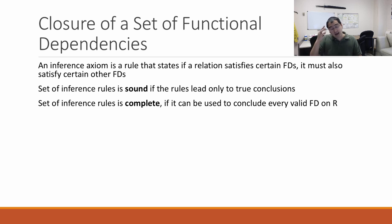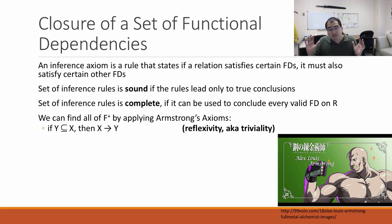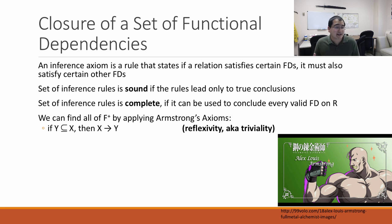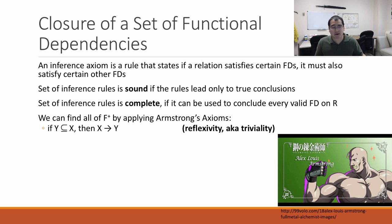The axioms I'm going to teach you are called Armstrong's axioms. The first rule is called reflexivity, or triviality: if all the attributes y are a subset of x, then x functionally determines y. Basically, if all the things on the right side are also on the left side, then the left side determines the right side. That's pretty obvious.